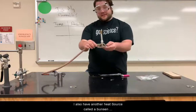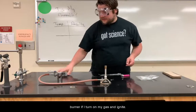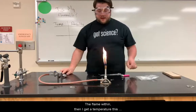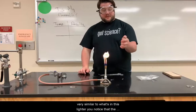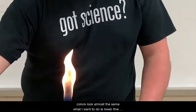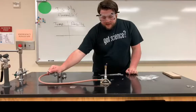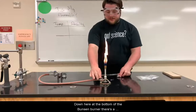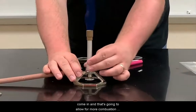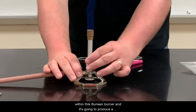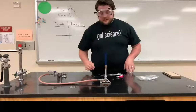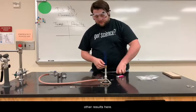I also have another heat source called a Bunsen burner. If I turn on my gas and ignite the flame, I get a temperature very similar to the lighter — you can notice the colors look almost the same. I lower the flame a little, and then down at the bottom of the Bunsen burner there's a port I can open up. That allows more oxygen to come in, which allows for more combustion and produces a much hotter flame.